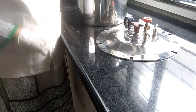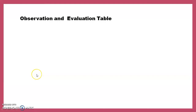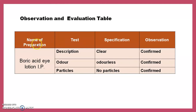Then we move towards the observation and evaluation table. The name of preparation is boric acid eye lotion IP. Tests include: description — clear, confirmed; odor — odorless, confirmed; particles — no particles present, confirmed.